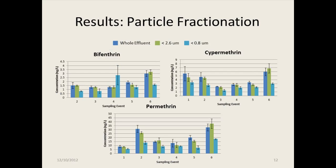The next result is the particle fractionation. Along the side you can see the concentration — that's the whole water concentration measured. Along the bottom are the sampling event numbers. The blue represents the whole effluent, the green less than 2.6 microns, and the turquoise less than 0.8 microns. The error bars represent the standard deviation between four replicates. There was one anomalous sample, but generally, there was really no difference between the blue and the green — so the first centrifugation removed little to no pyrethroid. However, upon the second centrifugation, we did see a statistically significant removal in most cases — around 40 percent was removed.